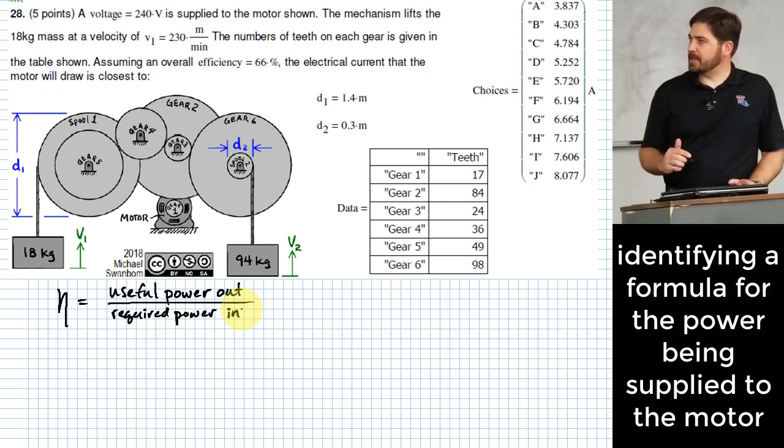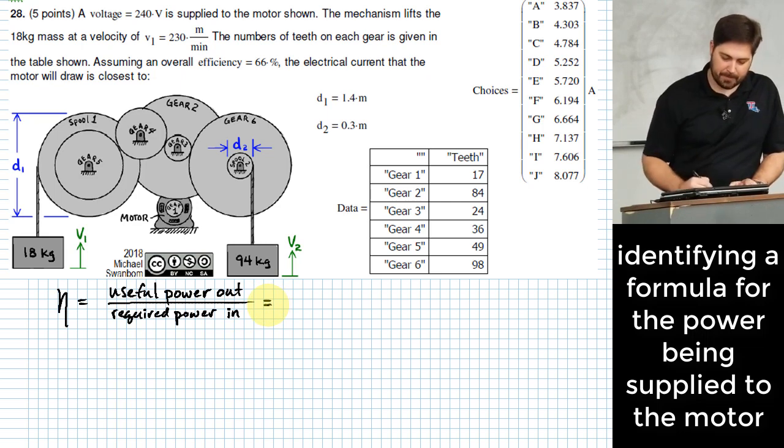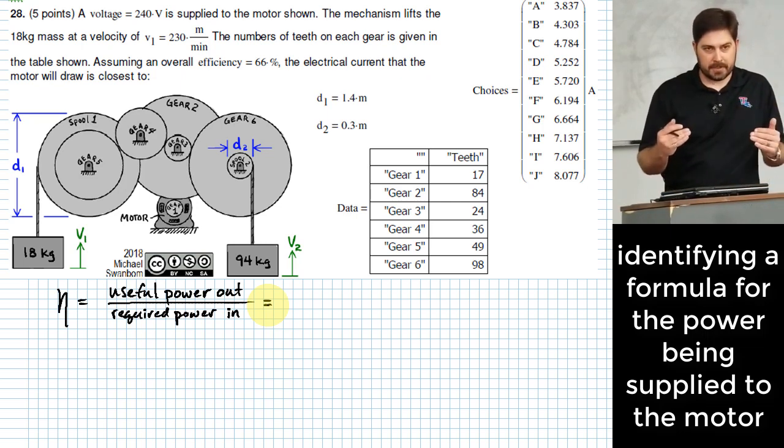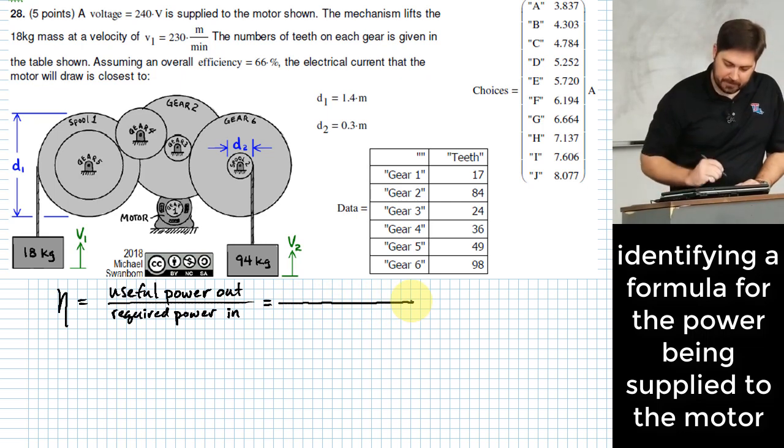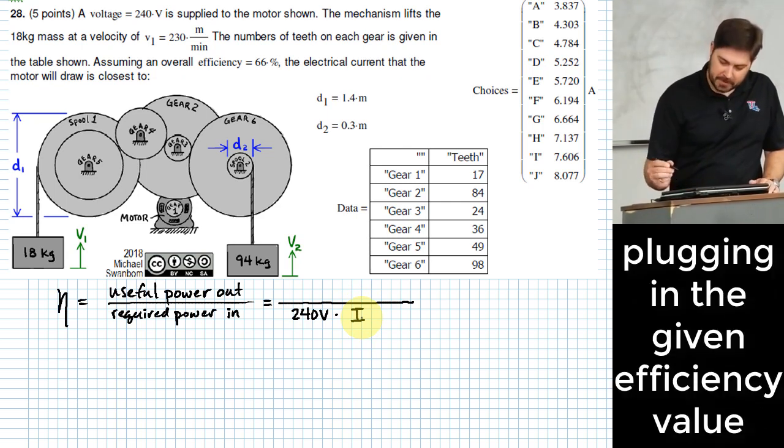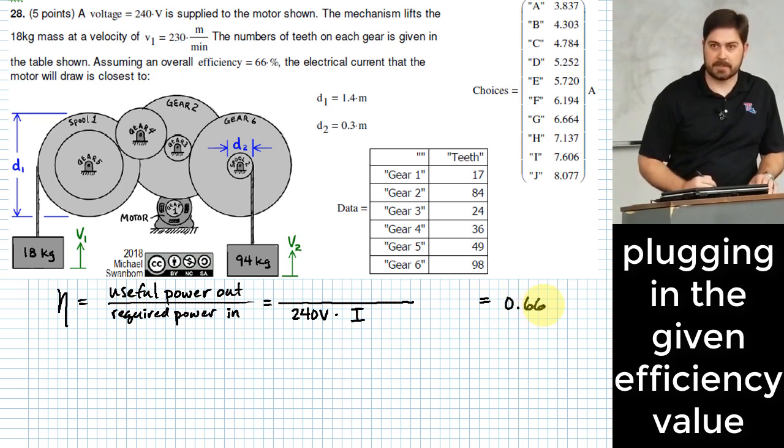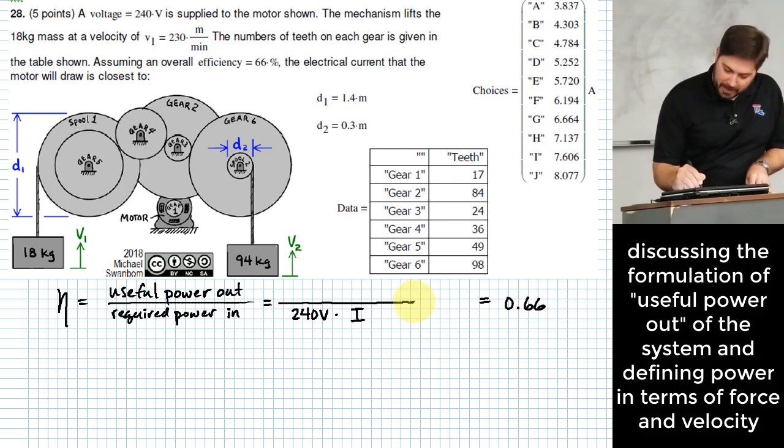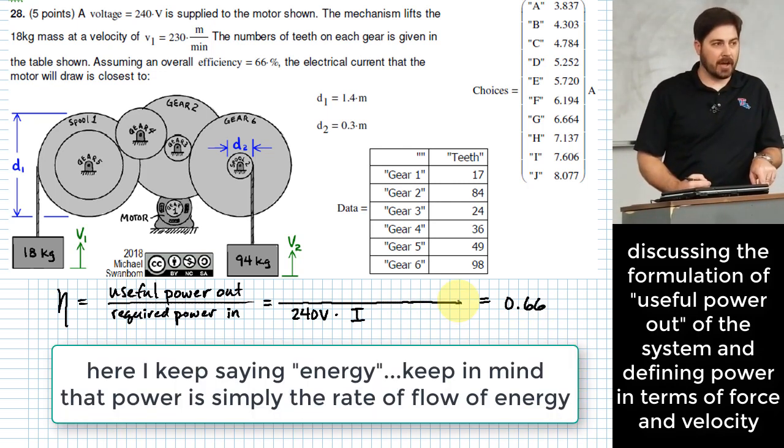Do we have any way of stating what our required power in is going to be or is for this problem? Electrical power. Electrical power can be stated in terms of voltage times current. We know one of those factors. We just don't know the other factor. So we can easily get the denominator of this by, we can just take 240 volts and multiply it by this unknown thing that I'll just call I. That's what we're trying to find. We also happen to know that this whole thing has to equate to 66%, which if we state that as a decimal, we go to 0.66.